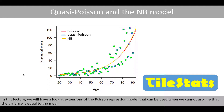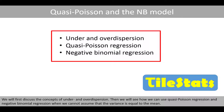In this lecture, we'll have a look at extensions of the Poisson regression model that can be used when we cannot assume that the variance is equal to the mean. We will first discuss the concepts of under- and overdispersion, then see how we can use quasi-Poisson regression and negative binomial regression when we cannot assume that the variance is equal to the mean.